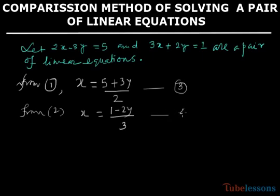From the first equation you transpose minus 3y to the other side, so it becomes plus 3y. So 5 plus 3y, and as it is 2 into x, divide by 2. From the second equation, 1 minus 2y, and it is 3x, so divide by 3.